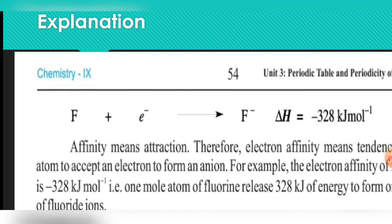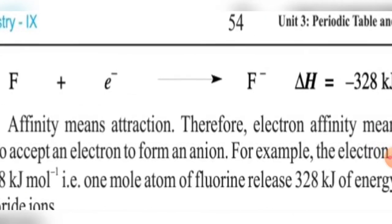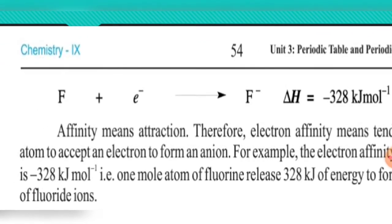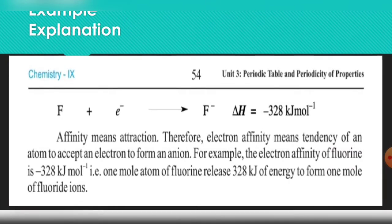This means that when chlorine gains one electron, its octet is complete and it becomes stable. Systems that are stable have the lowest energies, and atoms that are unstable have higher energies compared to stable atoms. That's why when it gains an electron, its outer shell becomes complete, and it releases energy by converting from unstable to stable form.